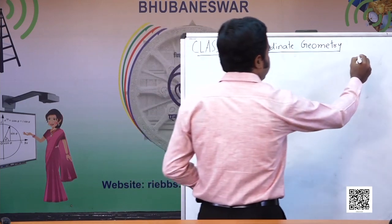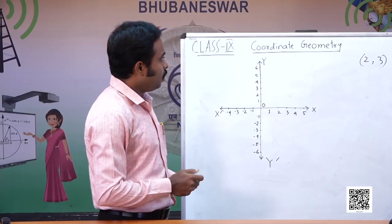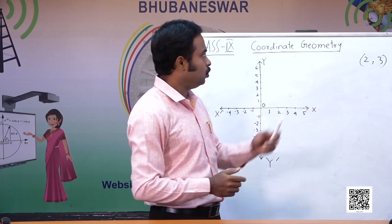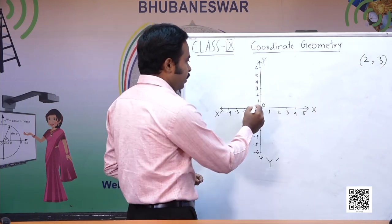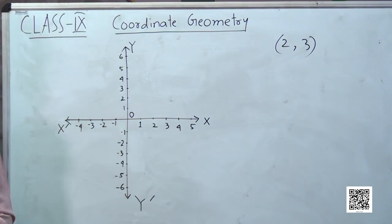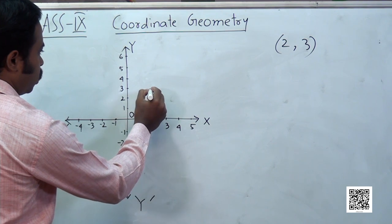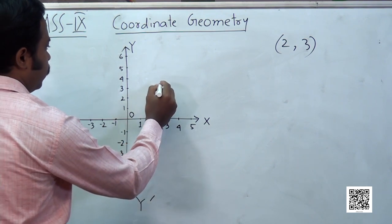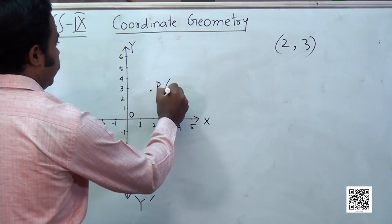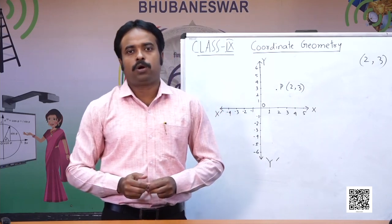So if we take the point 2 comma 3 and want to plot this point — that means we have to go 2 units along the x-axis, then we have to go 3 units along the y-axis. If we take P as this point, then the coordinate of this point is 2 comma 3, or P is the point which represents 2 comma 3.